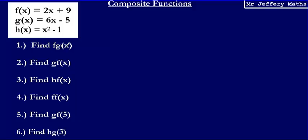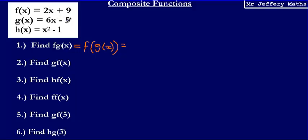We're asked to find f of g of x. We can think of this as being f of g(x), which means we are going to substitute g(x), so 6x minus 5, into f(x), which is 2x plus 9. So we're simply going to take 6x minus 5 and substitute that for x.